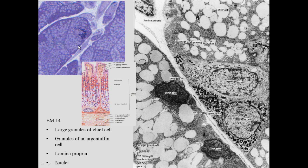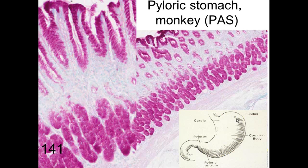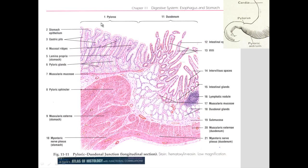Moving through the fundic stomach into the pyloric region, there is again a mucous secretion to help raise the pH and prevent digestion of the duodenum by the acidic stomach contents. The surface mucous cells are present, and the gastric glands are of a mucous type, as shown by PAS staining.